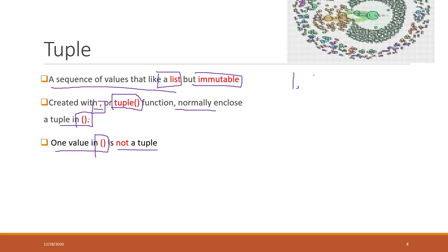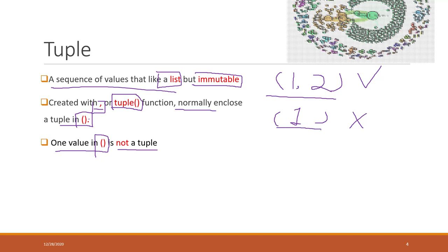If we have two values — 1 and 2 — that is a tuple because we have the comma. As a convention, we put that into parentheses. A single value inside parentheses without a comma is not a tuple. But if you put just a comma after a single value like '1,' within parentheses, that is a tuple.